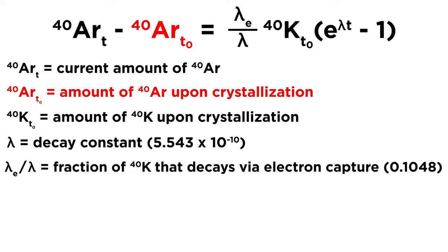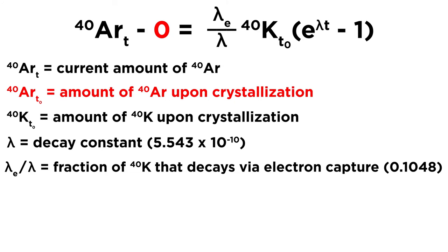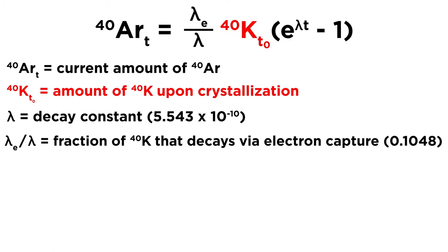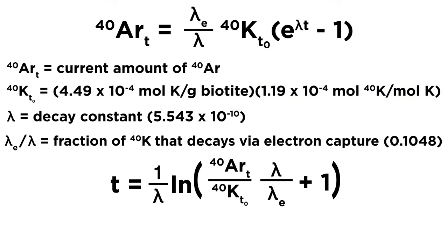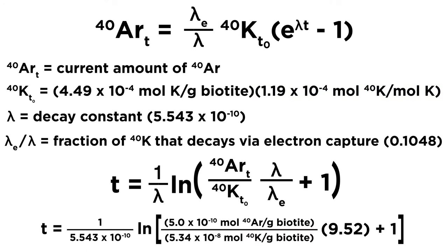Next, because argon is not taken up into biotite during crystallization, we can assume that 40Ar(T0) is zero. We can also calculate 40K(T0) simply by knowing the amount of potassium in biotite, which is 4.49 × 10⁻⁴ moles potassium per gram biotite, and multiplying it by the fraction of potassium-40 in nature, which is 1.19 × 10⁻⁴. After rearranging the equation, we can now solve for T. A rock that contains 5 × 10⁻¹⁰ moles of argon per gram of biotite would have a radiogenic age of 154 million years.